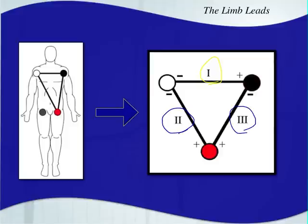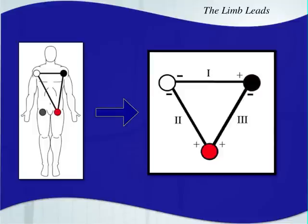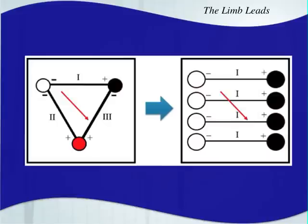It's going to make more sense as we start to talk about what these leads are actually viewing. Notice that the left arm electrode can actually be positive or negative depending on which lead you're viewing from. That's true for the other electrodes as well, because when you start talking about the augmented leads — for instance AVR — AVR uses the right arm as a positive electrode. So these electrodes can actually change their polarity depending on the lead that you're looking at. Remember, the lead is the camera angle.